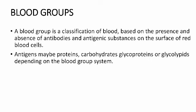Today we are going to learn about blood groups. What is a blood group? A blood type is also known as a blood group. Blood group is a classification of blood based on the presence and absence of antibodies and antigenic substances on the surface of red blood cells.